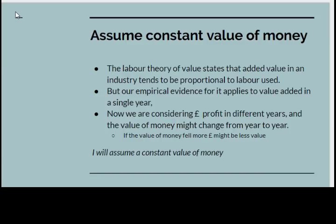We've produced empirical evidence for that in earlier lectures, but our empirical evidence applies to value added in a single year. When we're considering the evolution of the rate of profit, we're considering pounds of profit in different years and the value of money might change from year to year. If the value of money fell, one pound of profit might represent less value in ten years' time than one pound of profit does today. In order to abstract from the effects of inflation, I'm going to be assuming a constant value of money. If there is inflation, it can appear to an unwary capitalist that they are making profit when all they are doing is holding on to an asset whilst its price inflates.